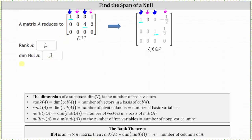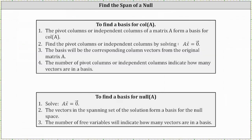If you wanted to find the vectors that form a basis for the null space, we would solve the vector equation A times vector x equals zero. The spanning set of the solution set forms a basis for the null space, which is why the number of free variables or number of non-pivot columns indicates how many vectors are in a basis.